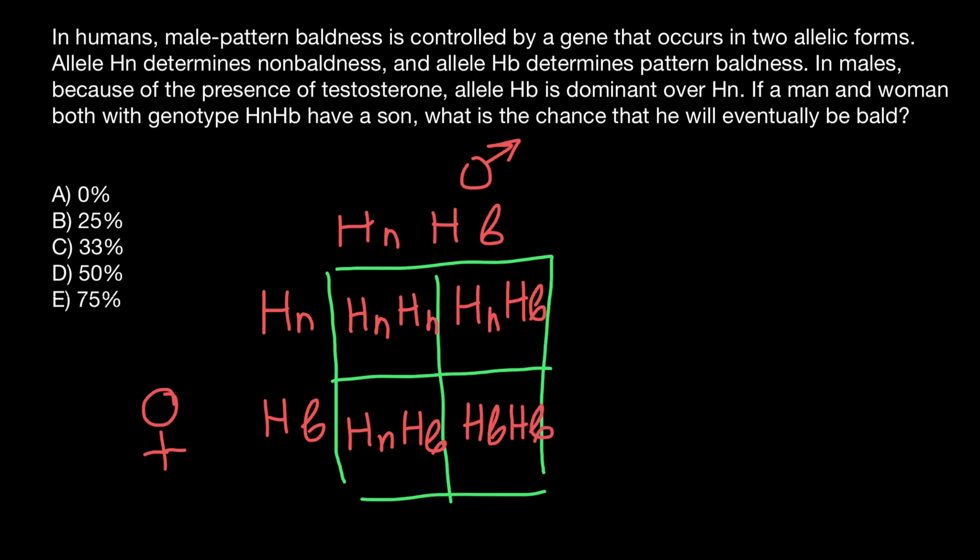According to our problem, allele HB is dominant over allele HN. So for example, let's consider this genotype. This person who has two dominant alleles HB determines pattern baldness, so we can say that person who has two such alleles is going to be bald.